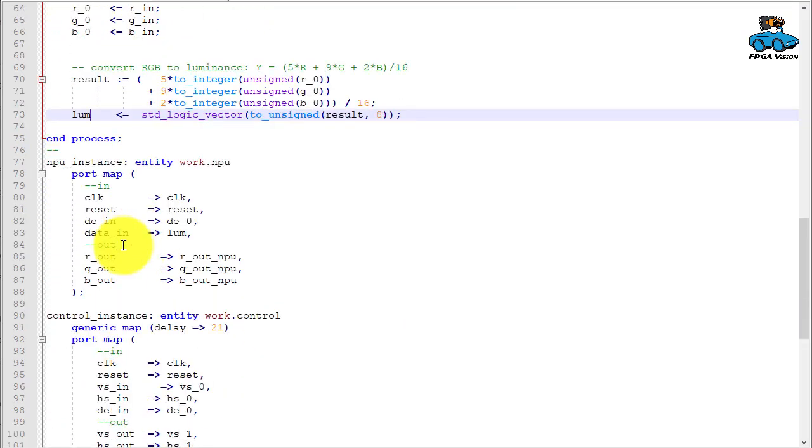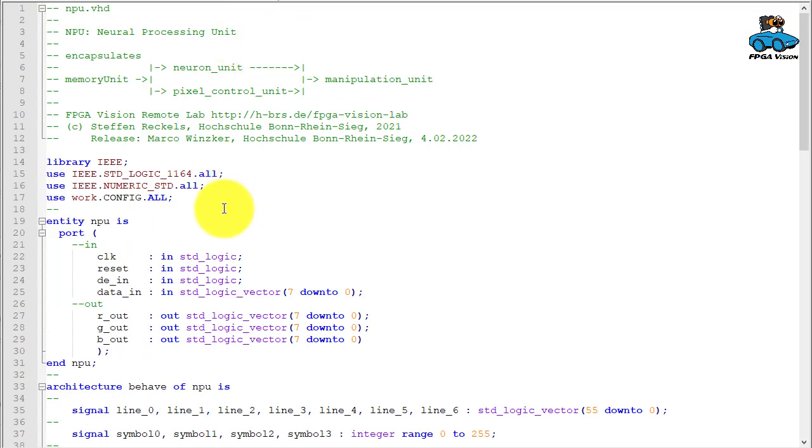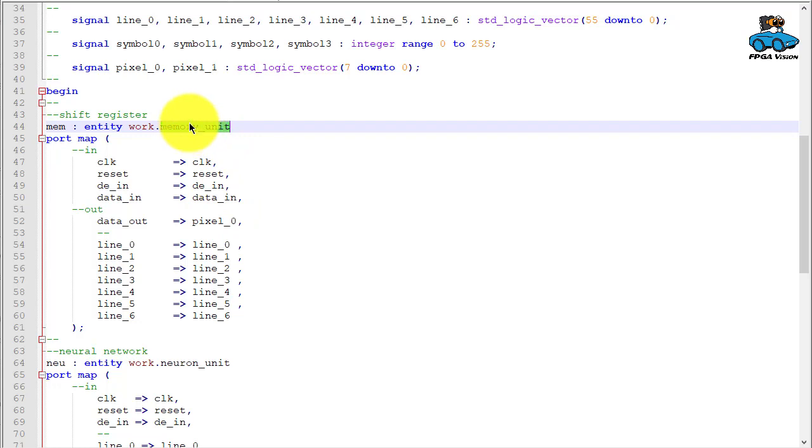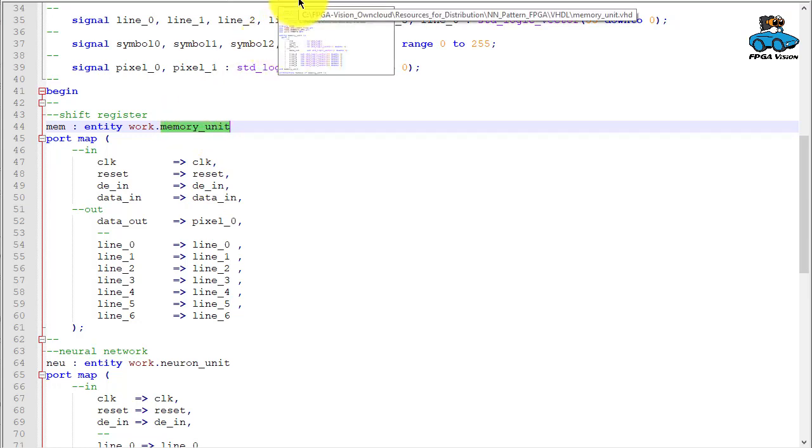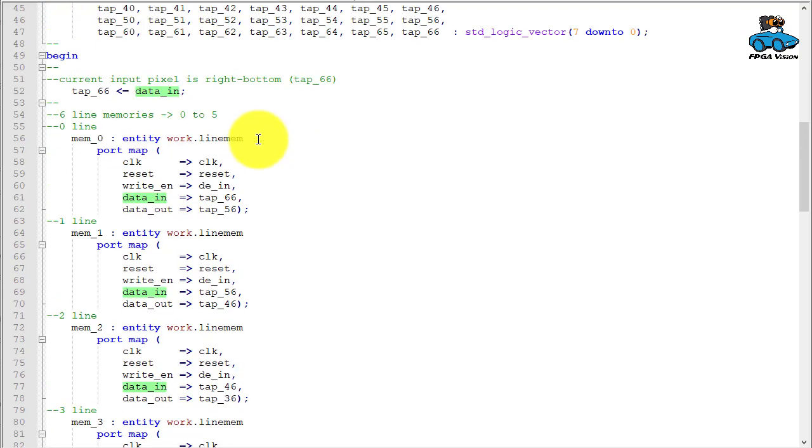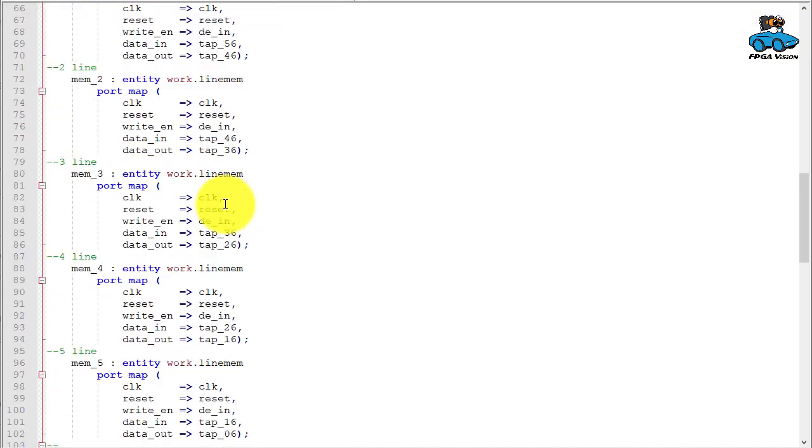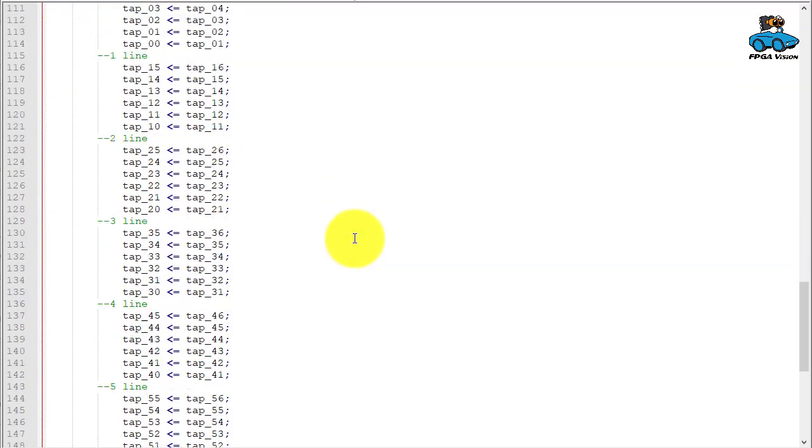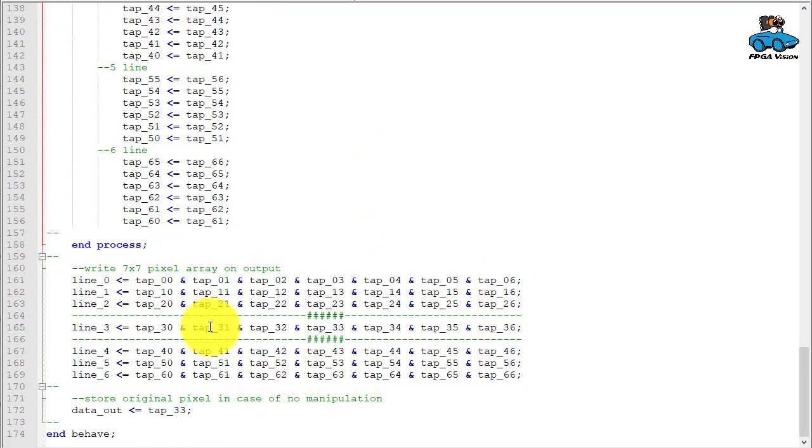And then this grayscale image goes into NPU. This is NPU, and here we have a memory unit to store the 7x7 region. Let's have a look at that function. The input signal is stored in six line memories. And then the output of the line memories is stored in individual pixels to give the 7x7 region. So this is the 7x7 region of the input pixel array. We also give out the center pixel for overlay of the image.